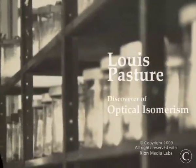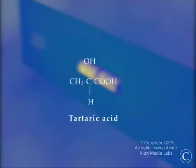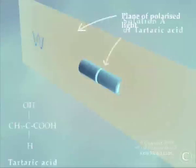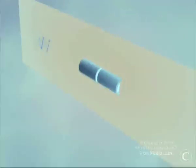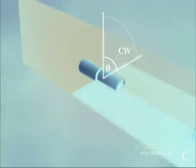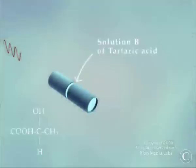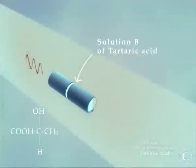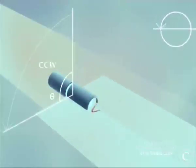Optical isomerism was discovered by a French scientist, Louis Pasteur. Pasteur discovered optical isomerism through a strange behavior of a compound called tartaric acid. Pasteur saw that one solution of tartaric acid rotated plane polarized light in the clockwise direction by a certain angle, and another solution of tartaric acid rotated the same light in an equal and opposite anti-clockwise direction.